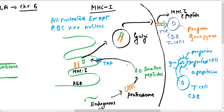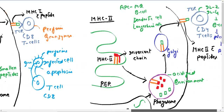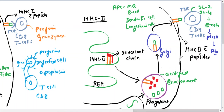For USMLE vignettes, two key clinical correlations: First, if there is a mutation in TAP (Transporter Associated with Antigen Processing), the antigen cannot be loaded onto MHC1 in the RER. Second, if there is no acidification of the lysosomes or phagosome, the invariant chain cannot be degraded, the peptide-binding groove of MHC2 remains blocked, and the antigen cannot bind to MHC2 to be presented to the CD4+ helper T cell. Remember both of these high-yield concepts.